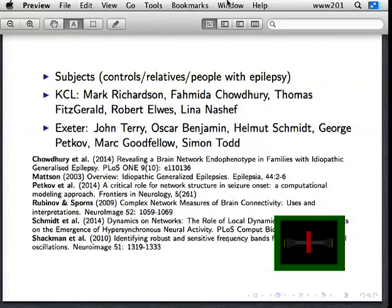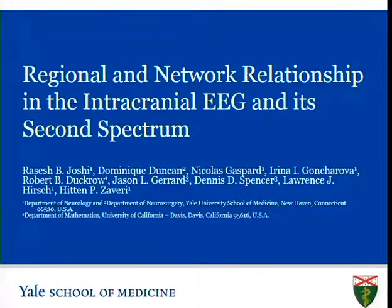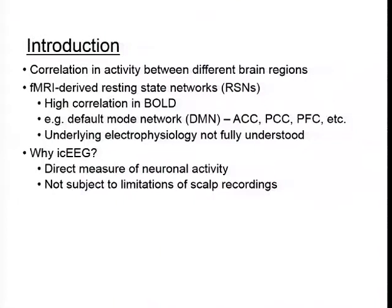There is considerable interest in understanding correlations and activity between different brain regions. Specific regions of particular interest are fMRI-derived resting state networks, which are regions of the brain that show high correlation in the BOLD signal when the subject is in a resting or non-tasked state. An example of one such resting state network is the default mode network, which is thought to include parts of anterior cingulate, posterior cingulate, prefrontal cortex, and other areas.